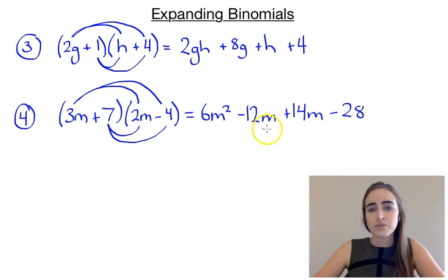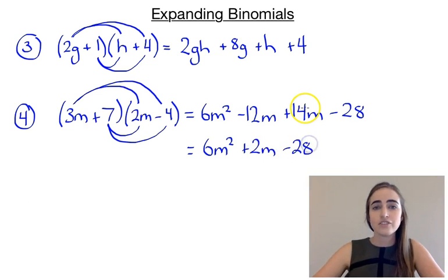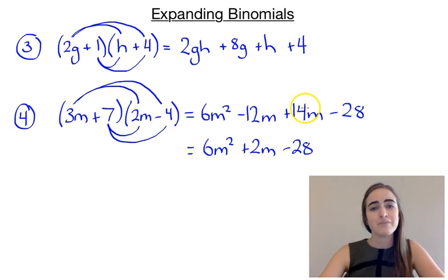And then collect like terms. So we've got our minus 12m plus 14m, which would leave us with 2m in the middle there. So we've still got our 6m squared plus 2m minus 28. So there are a few examples of expanding binomials.